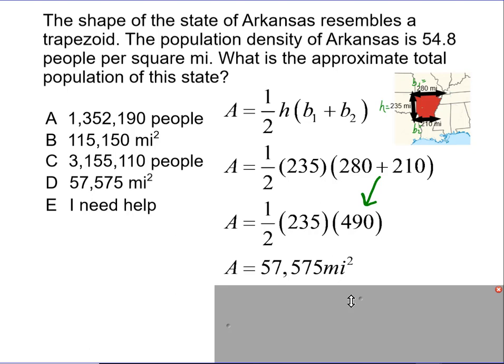I do notice that 57,575 square miles is answer choice D. But if we go back to the question, it's asking us what the population of the state is, so that eliminates answer choice D and answer choice B. I know I'm needing to find a number of people.